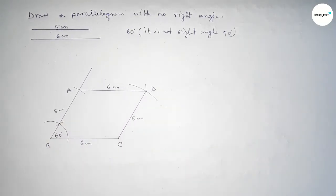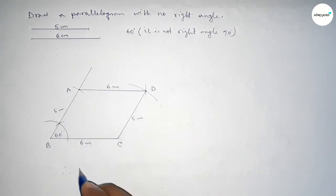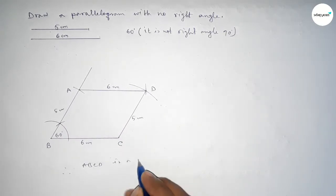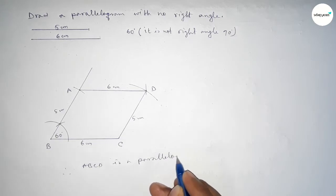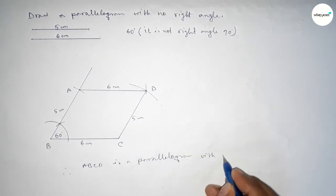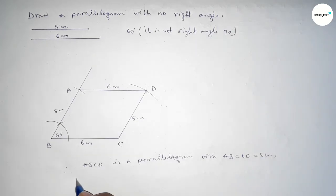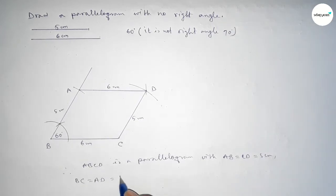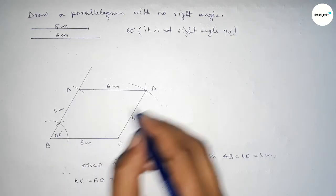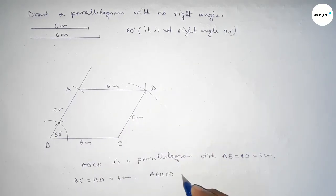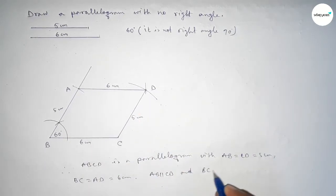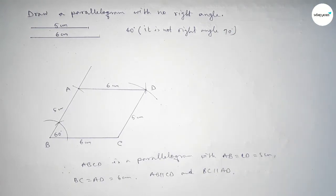Therefore ABCD is a parallelogram with AB equal to CD equal to 5 centimeters, and BC equal to AD equal to 6 centimeters. Side AB is parallel to CD, and BC is parallel to AD. That's all — thanks for watching. If this video is helpful to you, please share it with your friends.